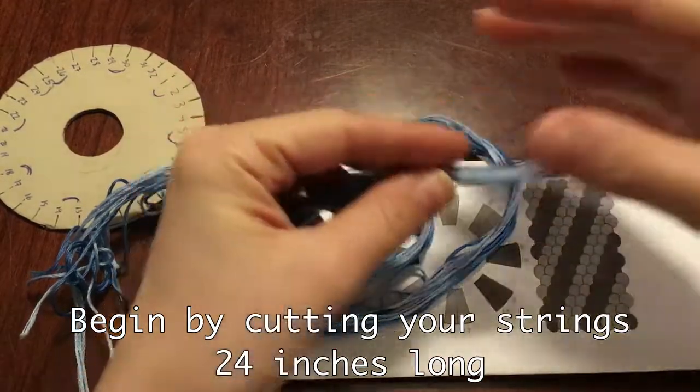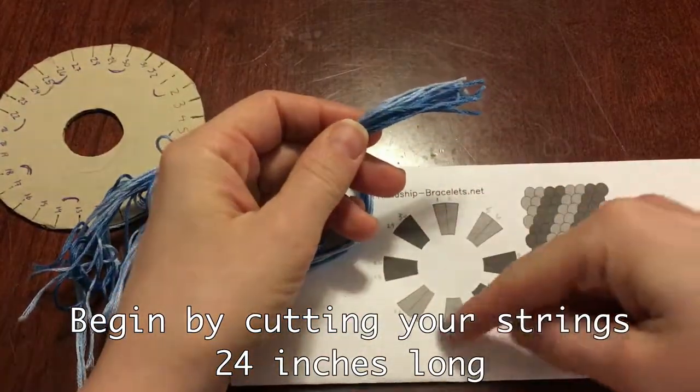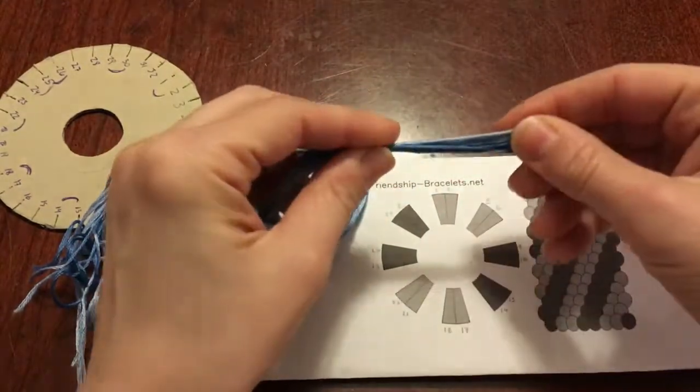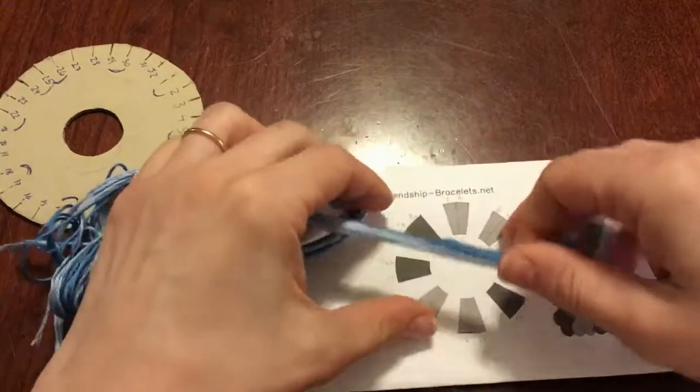Now that you have designed your pattern, cut your strings. You should have 16 strings and each one should be three times the length of your finished project. That means each string should be about 24 inches long.